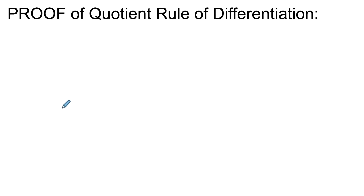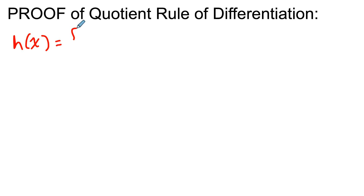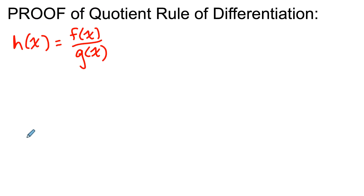Let's take a quick look at a proof for the quotient rule of differentiation. So let's say we have this function h(x), which is a quotient of two functions, f(x) and g(x). How do we find the derivative of that h(x) function? How do we find h'(x)?